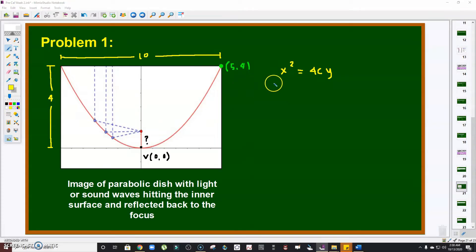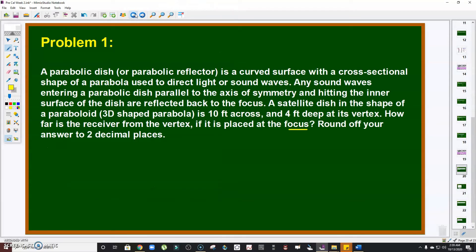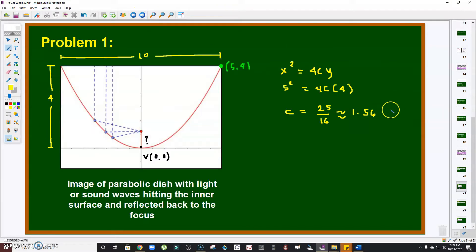Pretty simple. All we have to do is plug in (5, 4) in place of x and y respectively. That is 5² = 4c × 4, so clearly c = 25/16 or approximately 1.56 feet.